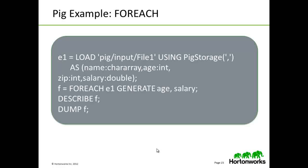This slide shows an example of using the forEach keyword. We create a relation called E1, then create a relation called f off of each record in E1 based upon a certain tuple expression. For each tuple in E1, we generate a tuple in f of age and salary. We use the debugging keyword describe to verify f is written correctly, and we cause a MapReduce job to occur by calling dump on f.